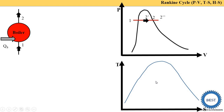Point number one, at the inlet of the boiler, has low temperature. When we heat it, its temperature first increases, then it converts from liquid to vapor, and then becomes superheated. Point one is at the bottom of the TS diagram. The temperature of the water rises first — we take the projection of point one on the y-axis and get T1.